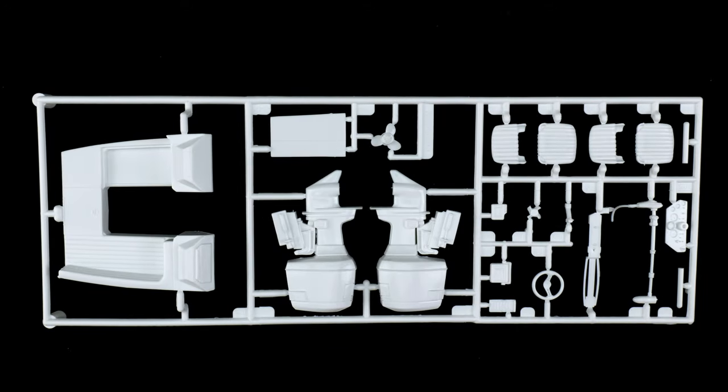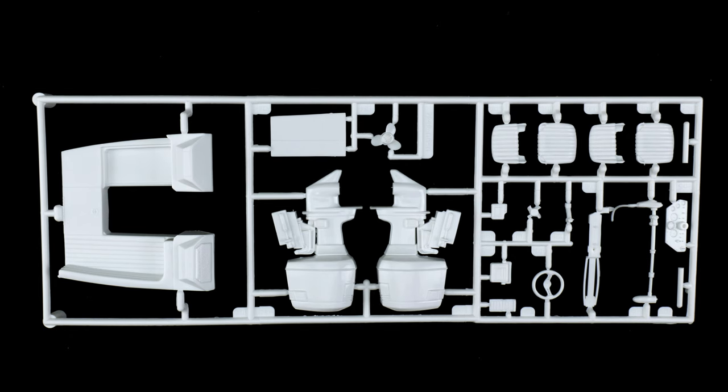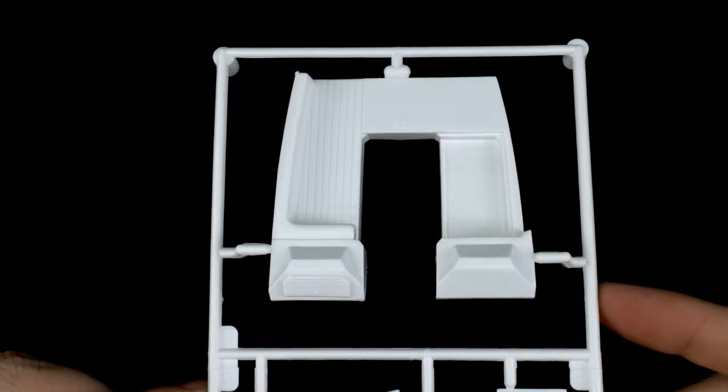Now we're going to take a look at the boat parts tree. Well, the main parts tree anyways. So you have your outboard, your seats, steering wheel, whatever we're calling this piece here.